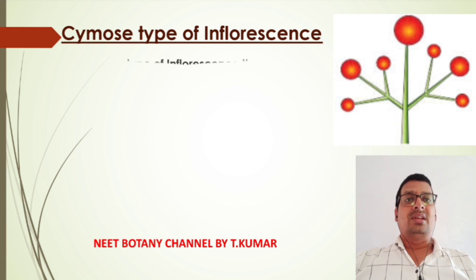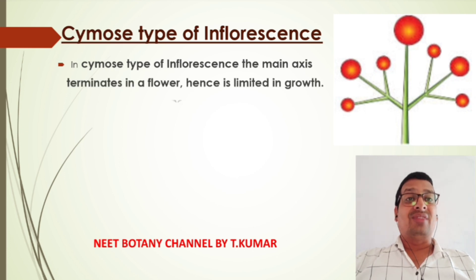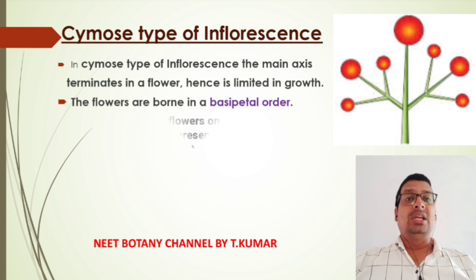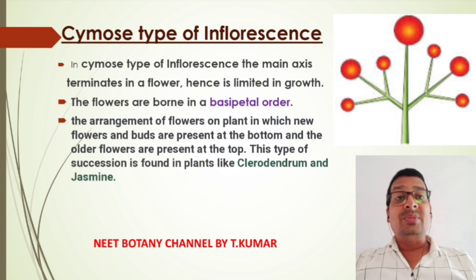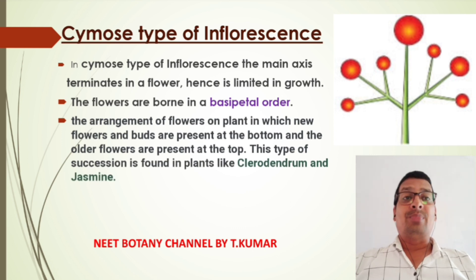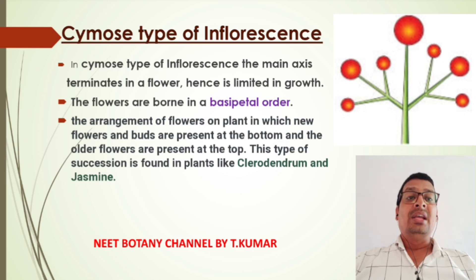In cymose type of inflorescence, the main axis terminates in a flower and is limited in growth. The flowers are borne in a basipetal order — new flowers and buds are present at the bottom and the older flowers are present at the top. This type is found in plants like clerodendron and jasmine.